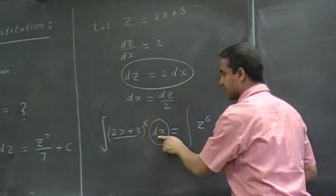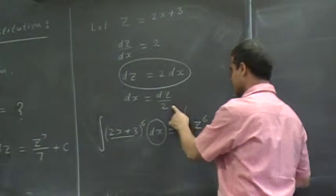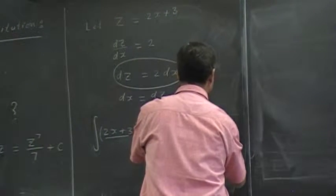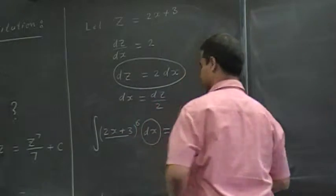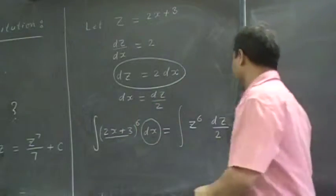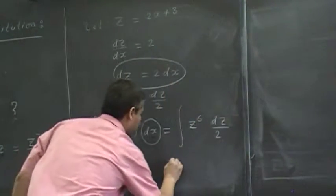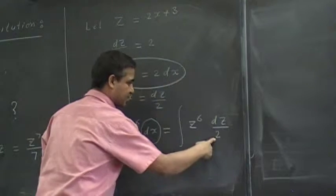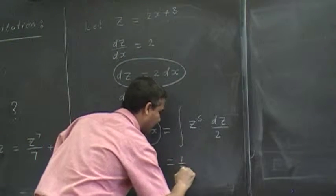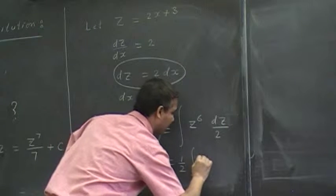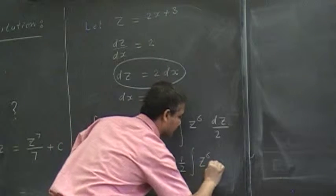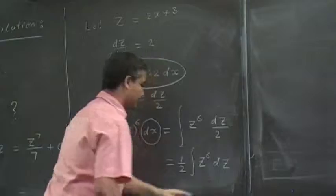z to the 6, dx is dz over 2. This is dz over 2. And, this is a constant, so I can pull our constant out, that is half integral of z to the 6 dz.